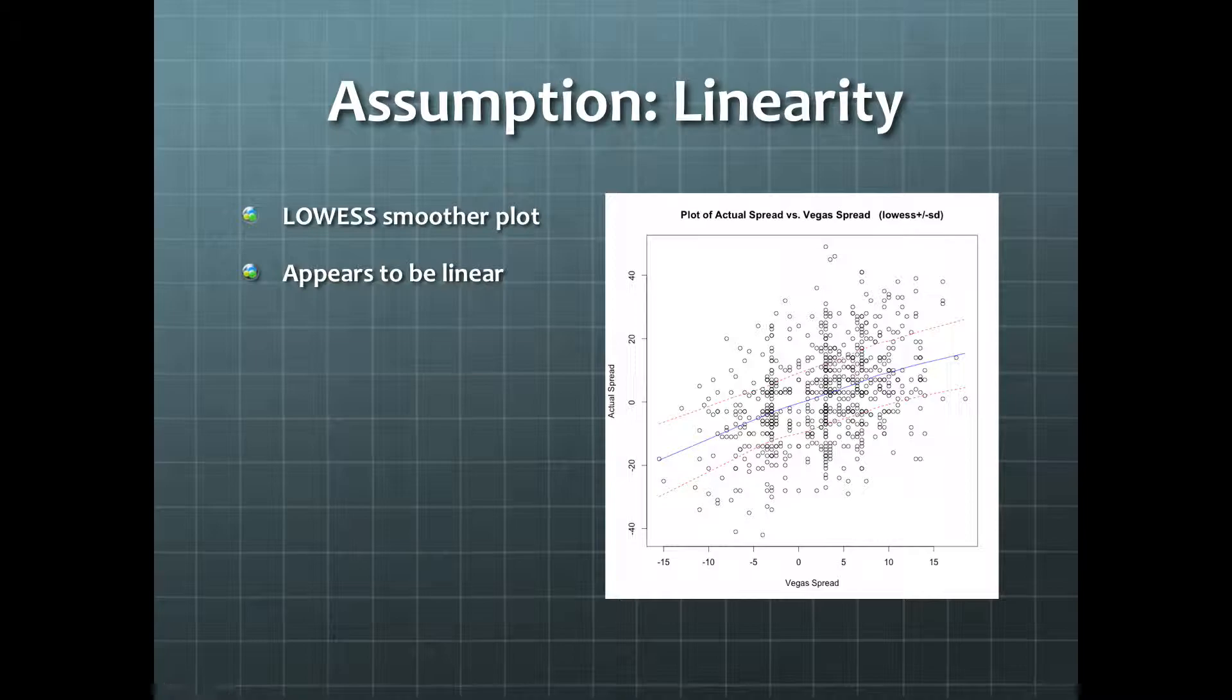Simple linear regression makes a few assumptions, which we must check. The first assumption is that there is a linear trend. You can see from the smoother plot that the main concentration of points appears to have a positive linear trend.